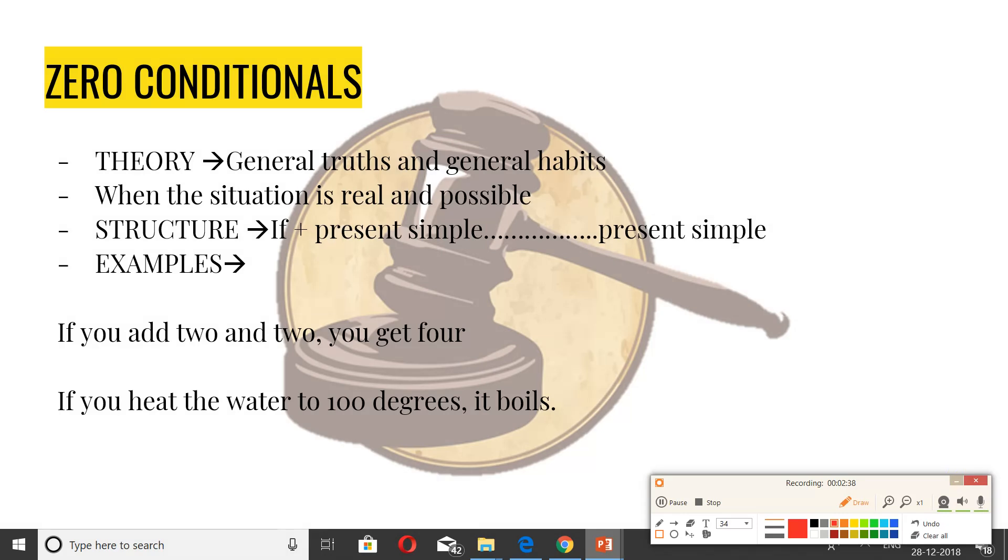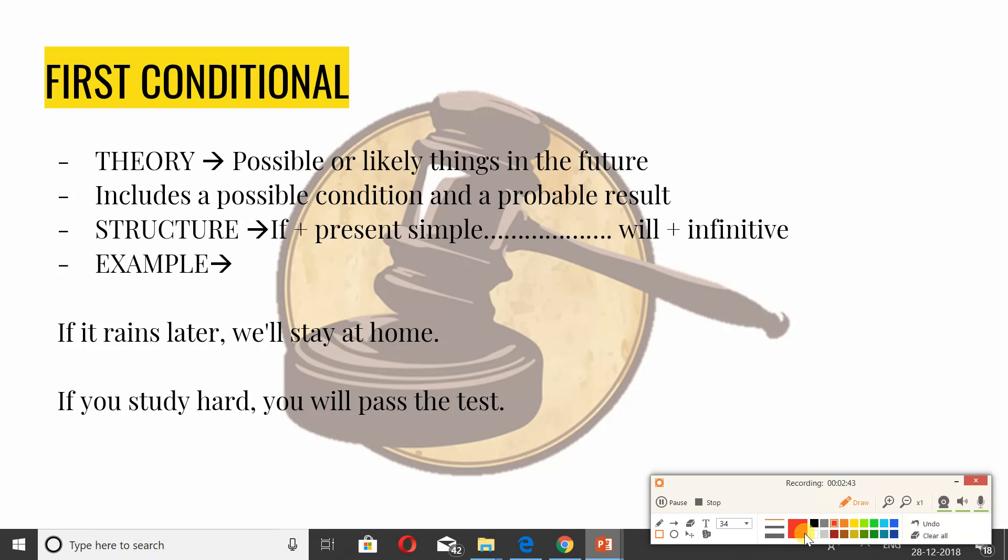Next up we have first conditional. A first conditional deals with possible or likely things in the future. Remember, it's for the future possibilities which are possible, very much likely to happen. It includes a possible condition and a possible result. Structure is if present simple tense, then will plus infinitive. If you look at the example: if it rains later, we'll stay at home. If you study hard, you will pass the test. Here, rains is the present simple tense, and we will is the future will. Study is again present simple. You will pass is again this will. It's coinciding with the structure.